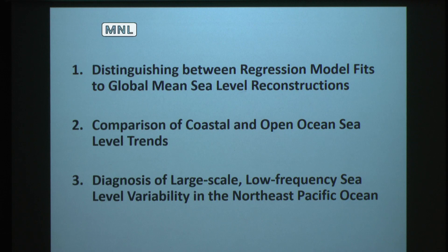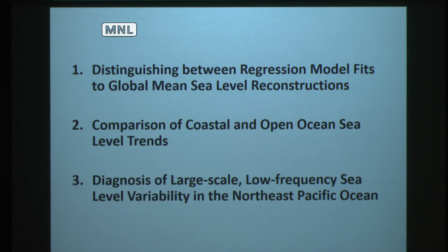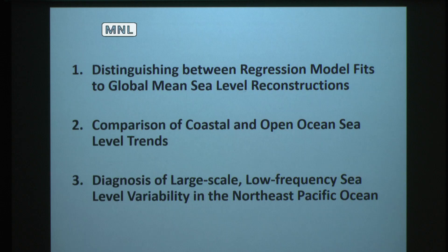The first topic is on distinguishing between these regression models. Global mean sea level time series before the satellite altimeter era rely on sea level records at tide gauges sitting along the global coast, which raises concern about whether sea level trends at tide gauges can represent those in the open ocean — this will be examined in the second topic with new data. As to the regional sea level variability, temporal damping and Rossby wave propagation are two important dynamic processes, but their relative roles are not clear, so they will be studied in the last topic.